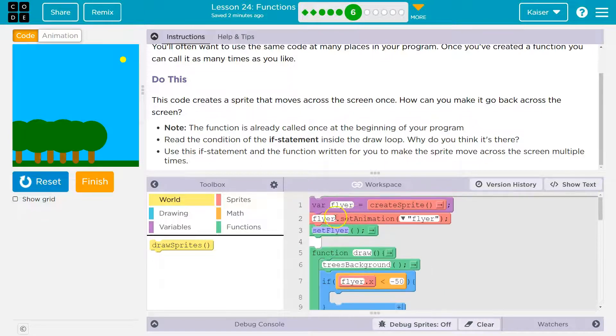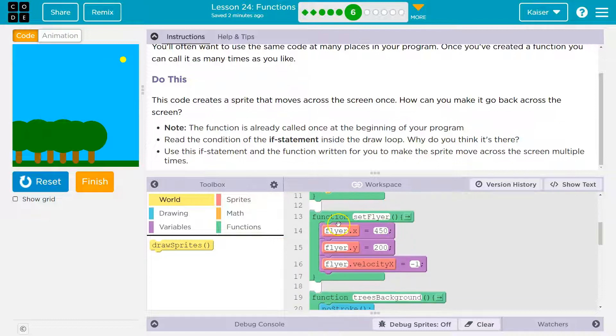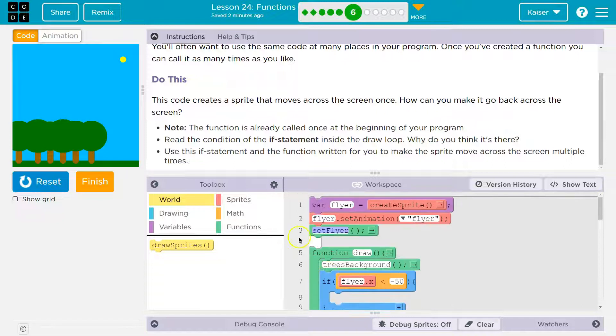So the computer will go, okay, create this variable, create an animation for it, set flyer, what's that? It sees this and says, oh, okay, I need to run this code. Puts the x location, sets the y location, gives it a velocity, hits the bottom of our function, and then it jumps all the way back here, right? It's done. It ran that block, and it keeps going down from there.